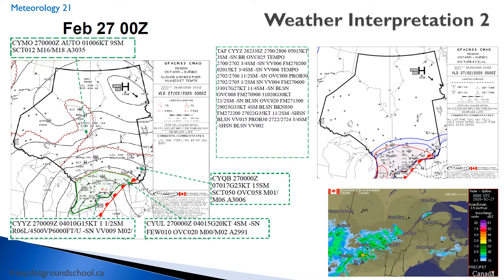Here we are on February 27th at midnight Zulu. We look at the validity date — midnight Zulu — and it was prepared the day before at 2331, half an hour before. We can see a nice warm front right here, and we're going to be spending most of our time looking at what's happening in southern Ontario, Toronto, and into Quebec. This is Moosonee right here, and in Moosonee the GFA is calling scattered at 7,000 tops at 16,000, and then broken bases at 3,000 tops at 7,000, patchy ceilings, light snow, 1200 AGL.